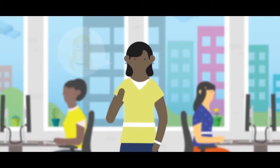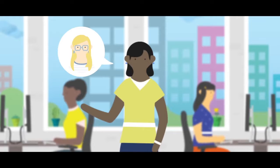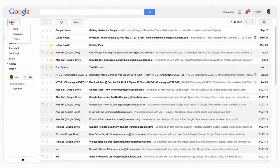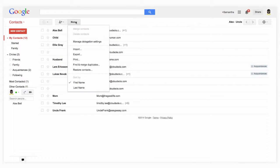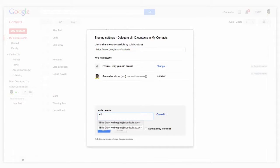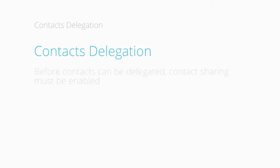Sam then tells us her life would be a whole lot easier if she could share her contacts with her assistant, Ellie. Luckily, this can be done by delegating Sam's contacts to Ellie. Contact delegation allows the user to delegate full access to their contacts in their personal My Contacts group without granting access to their mail or anything else from their account. This is a common delegation practice between executive users and their assistants. To do this, have Sam go to her Contact Manager, click the More pull-down menu immediately above her contacts list, and select Manage Delegation Settings. In the Add People text box, simply enter the email address of Ellie and click Share and Save to finish granting Ellie access to Sam's contacts. Before users can delegate their contacts, contact sharing must be enabled in the admin console.